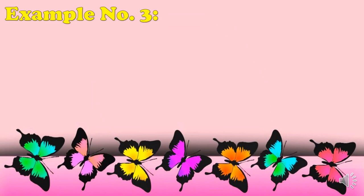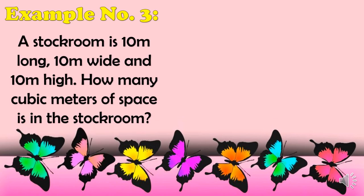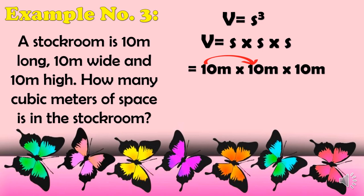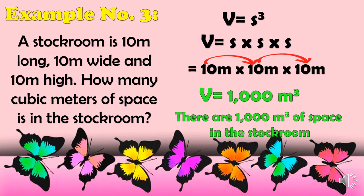Example number 3: A stock room is 10 meters long, 10 meters wide, and 10 meters high. How many cubic meters of space is in this stock room? Since all sides are equal, this is a cube. Using V = S³ = S × S × S, substituting 10 m for each side: 10 × 10 × 10 = 1,000 cubic meters. So there are 1,000 cubic meters of space in the stock room.